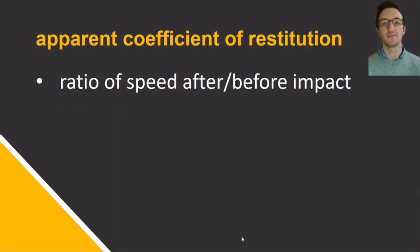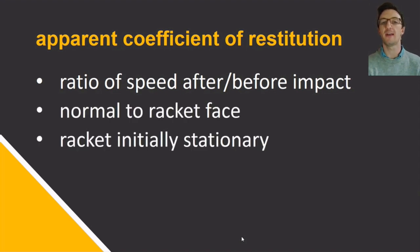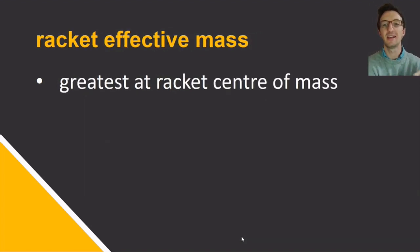The apparent coefficient of restitution is perhaps the most inherently performance-related sweet spot definition, because it is dependent on the ratio of ball or shuttle speed after to before impact. This is typically recorded normal to the racket face and assumes an initially stationary racket, so again not quite ideal for application to sporting performance. It is dependent on the relative velocities of the ball or shuttle and racket, and also on the mass and moment of inertia of the racket.